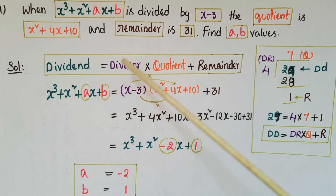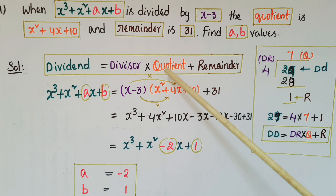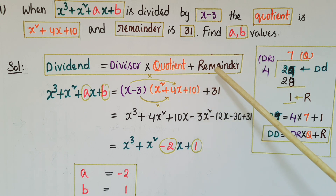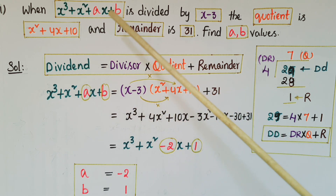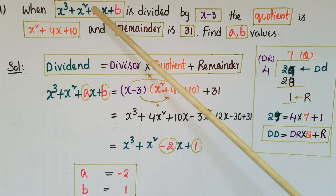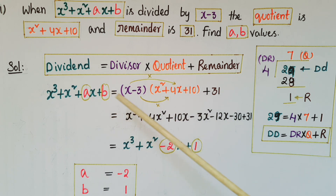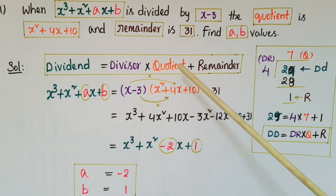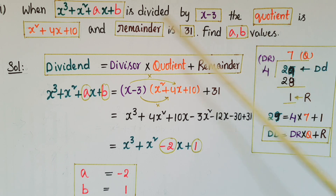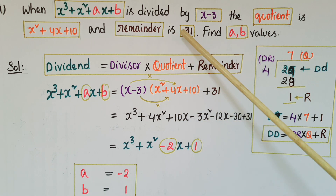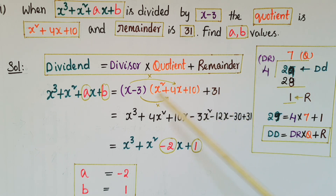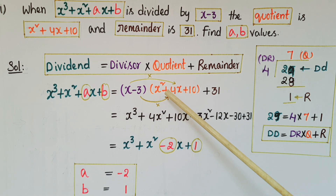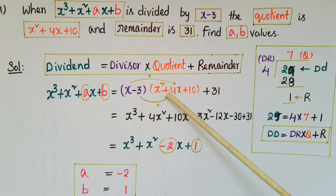So: dividend equals divisor into quotient plus remainder. Here the dividend is the polynomial x cube plus x square plus ax plus b, which equals divisor (x minus 3) into quotient (x square plus 4x plus 10), plus the remainder 31. Now we multiply x minus 3 into x square plus 4x plus 10.